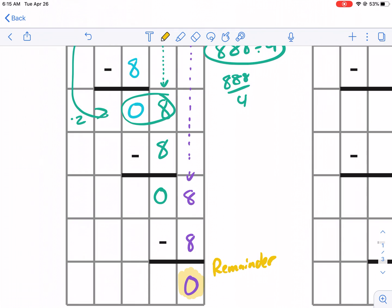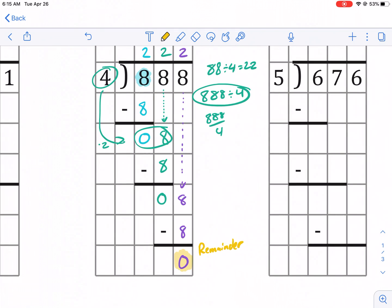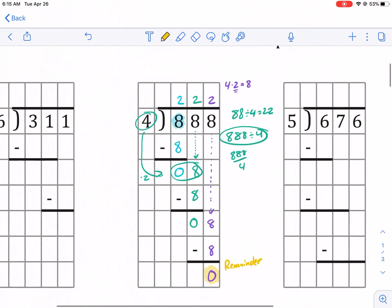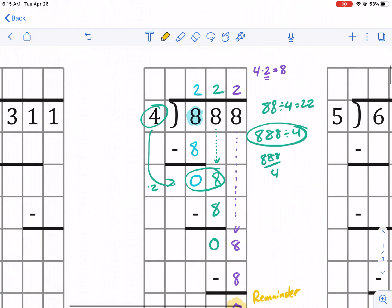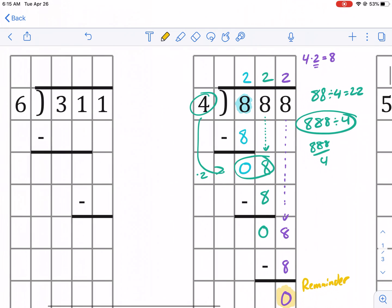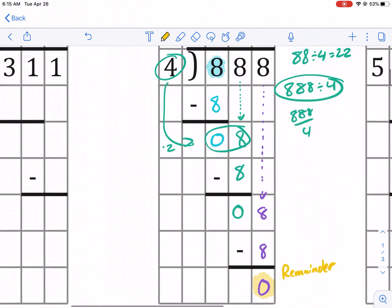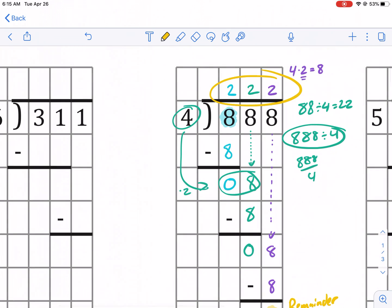So if it's a remainder 0, that means it fits in perfectly into the number without any little pieces at the end. For example, if we had four people eating five pieces of pizza, obviously someone's going to get an extra piece, an extra slice of pizza. So that would be a remainder. There's one remainder. In that example, there's zero remainders in this example. So it's just 222 is our answer.